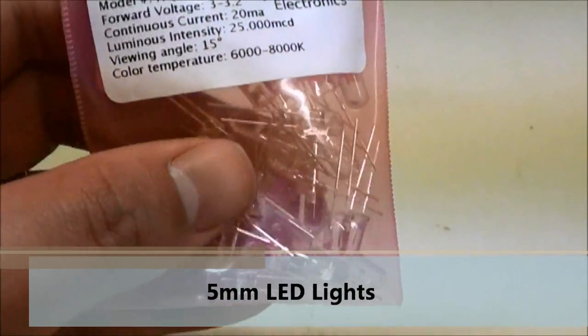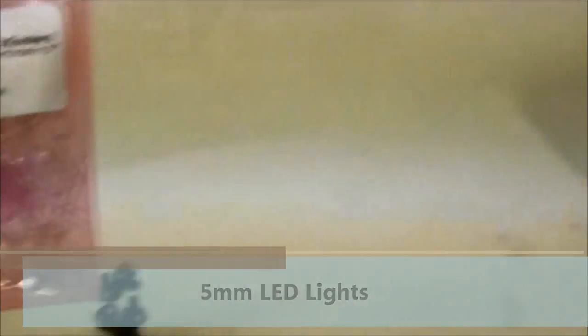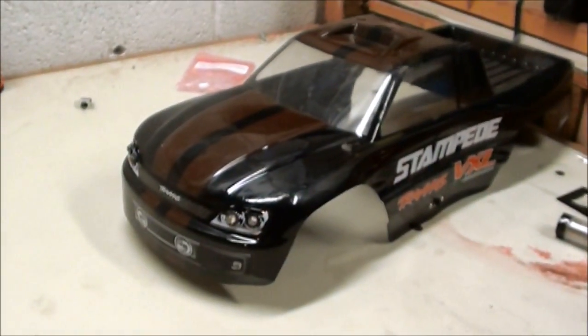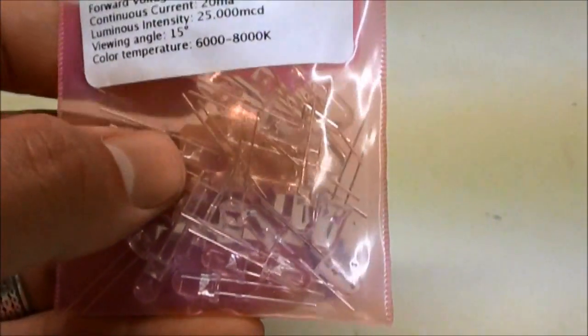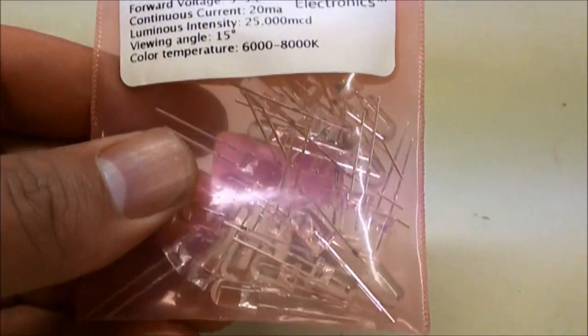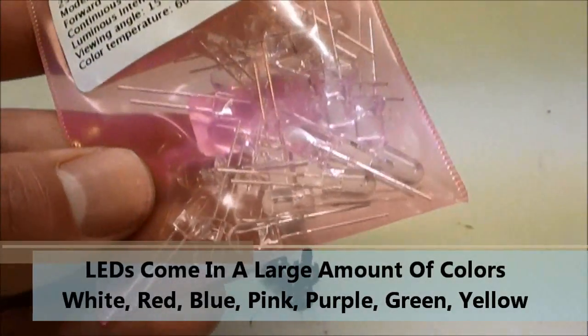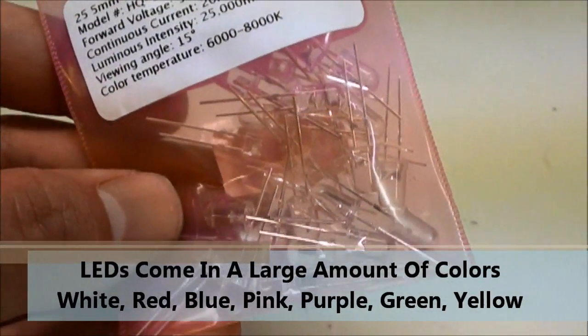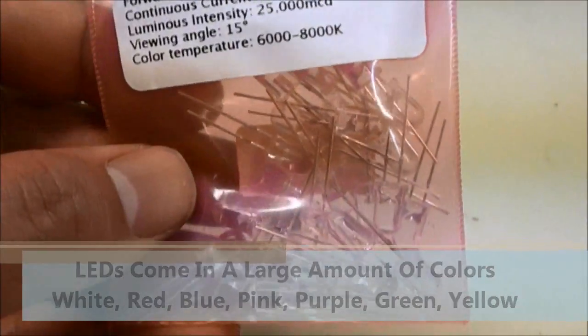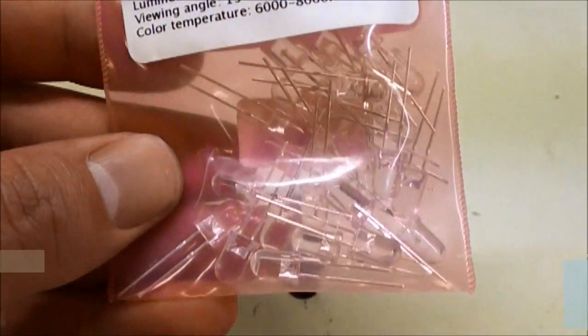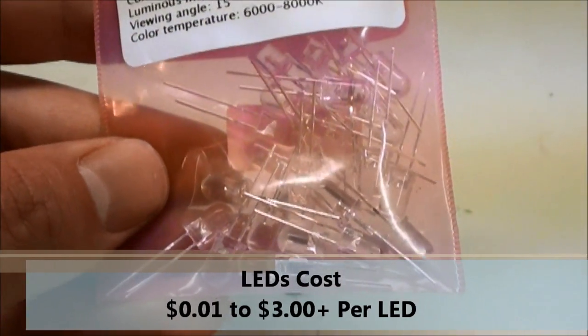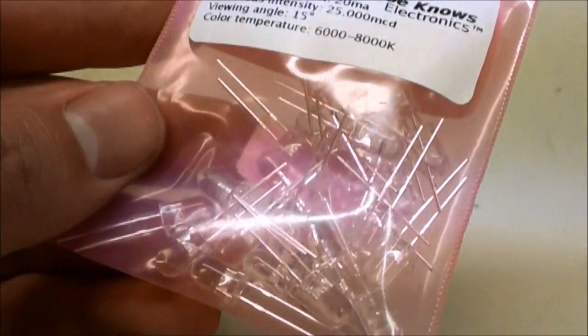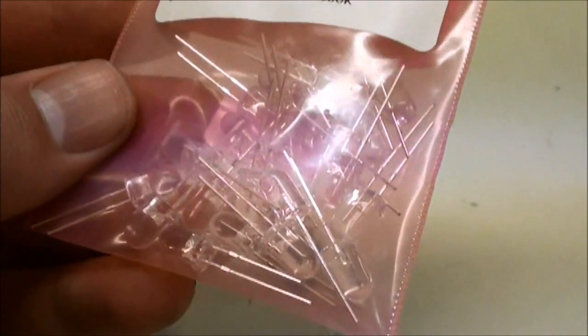First of all, you're going to need 5mm LEDs. Today I'm just going to be using clear white because I want to replace the kit that I have in the Stampede, mainly because I want to have six LED headlights instead of just four. LEDs come in a large variety of colors. The price for LEDs goes anywhere from a penny to three dollars per LED. If you buy them in bulk, you can usually get them for a pretty decent price, so make sure you look around.